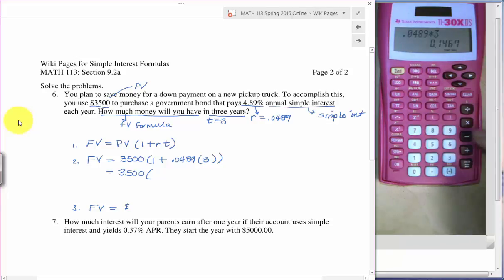I know if I add one to this value, I can just show that really easily. So 1.14. So I'll just write that next 1.1467. And then multiply it again by 3,500 this time. And I get 4,013.45.